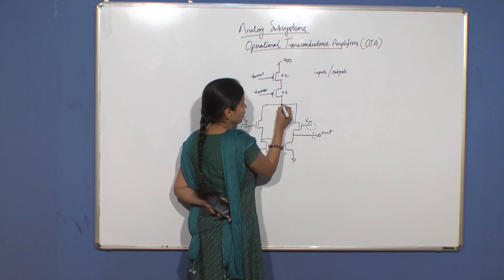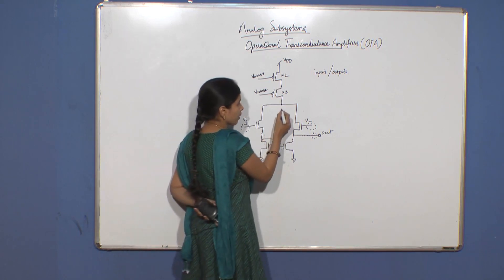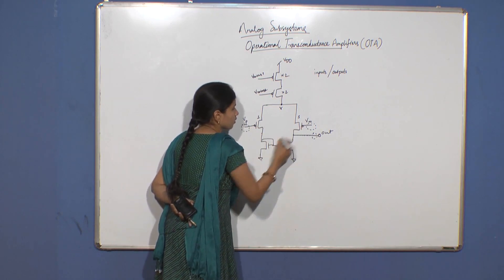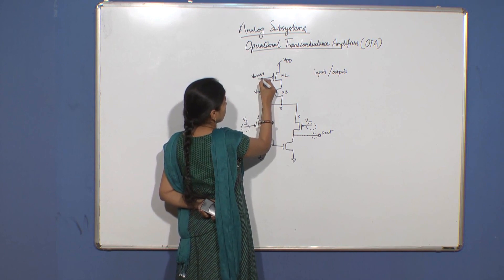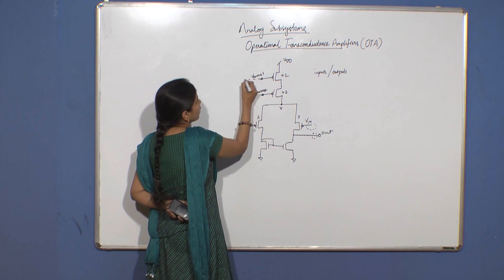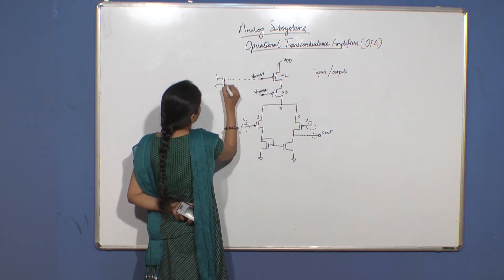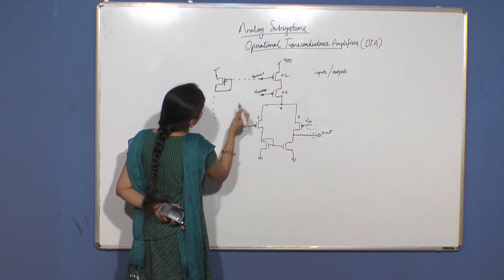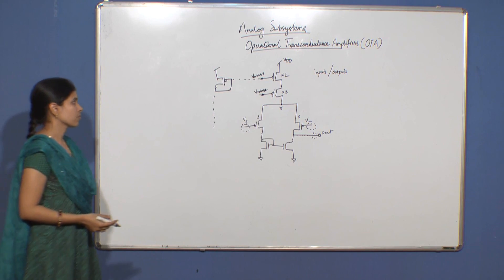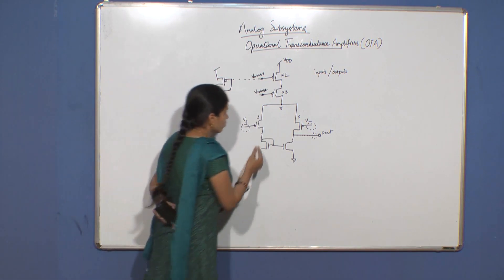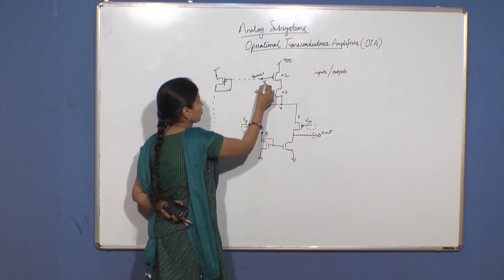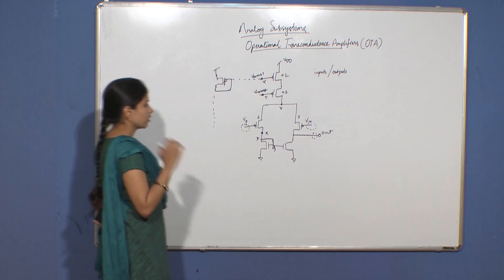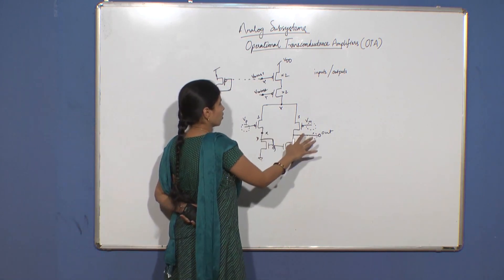What about this node? This node is not a high impedance node because these are the sources of your PMOS — they cannot be high impedance nodes. What about these other nodes? No, because they connect to the current mirror and the diode-connected load. If a node is connected to a drain-gate connected MOSFET, it is not a high impedance node. So you have only two high impedance nodes.